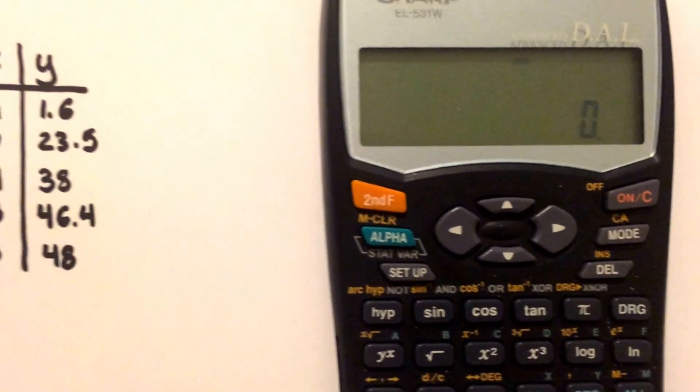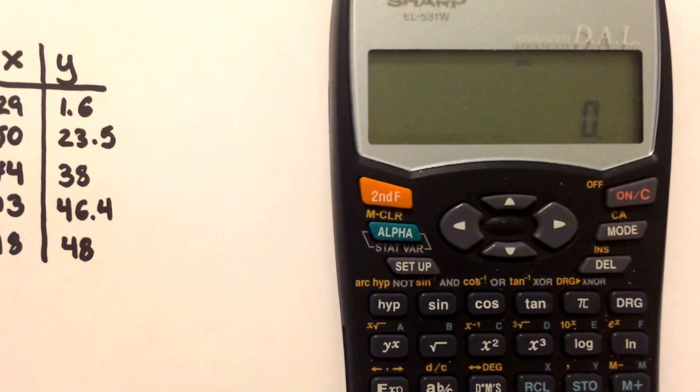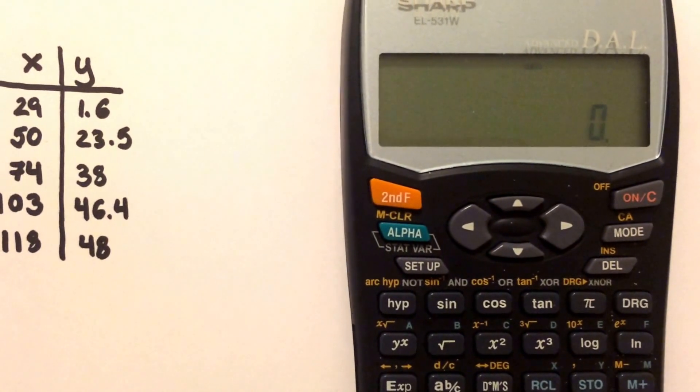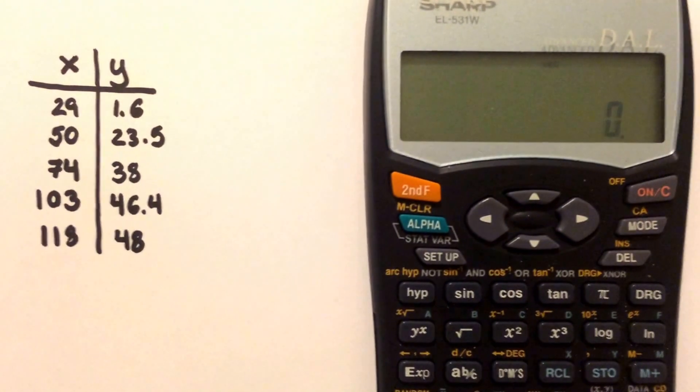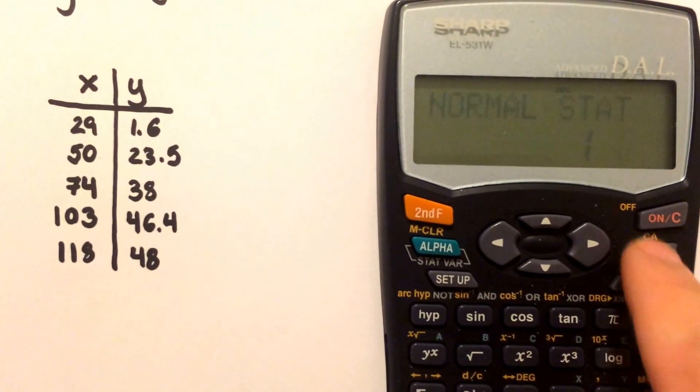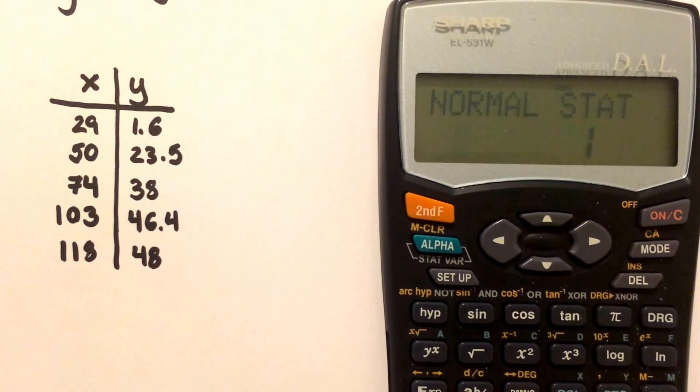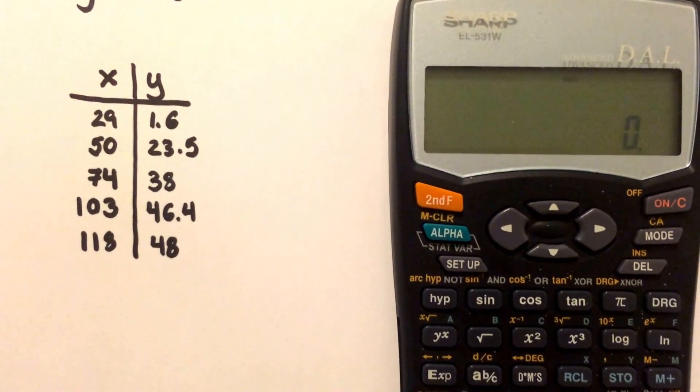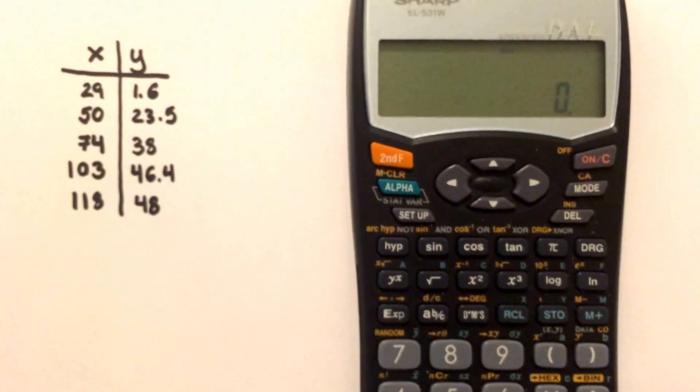First thing you want to do is make sure any previous data that's in your calculator has been cleared. You don't want any data in there affecting your current one. Go to mode and hit 0 for normal and you just cleared previous data.